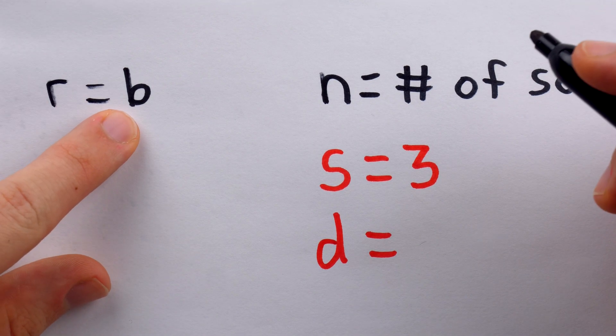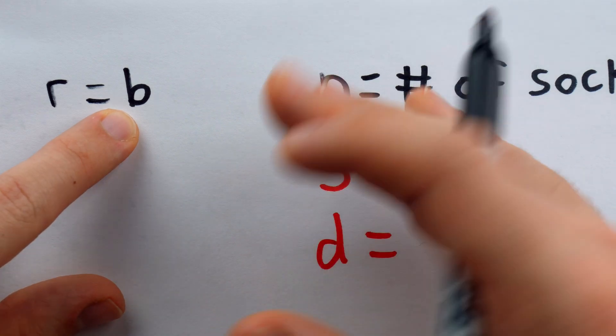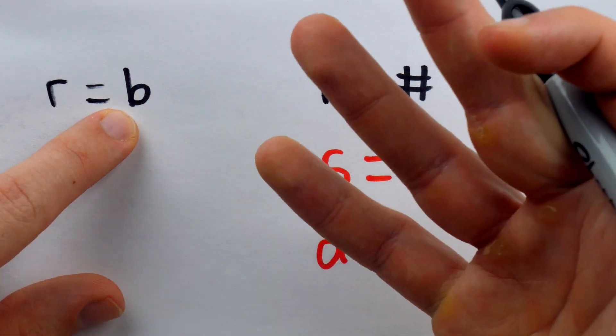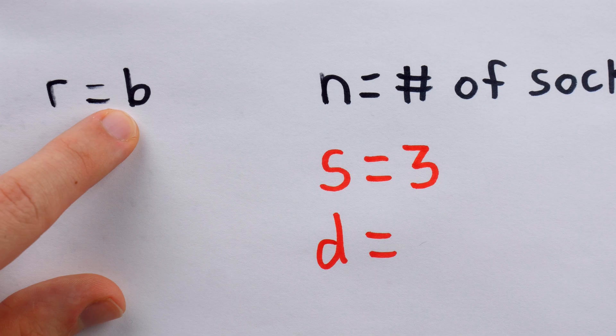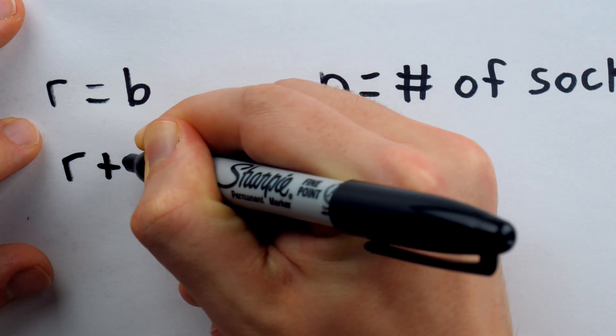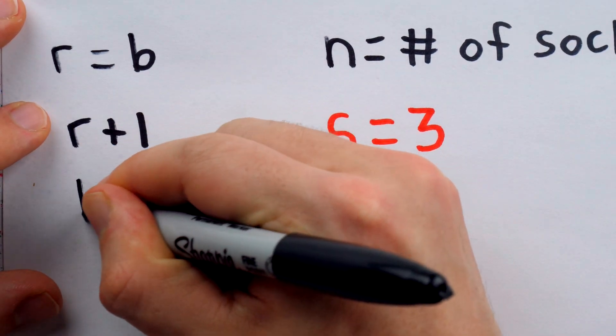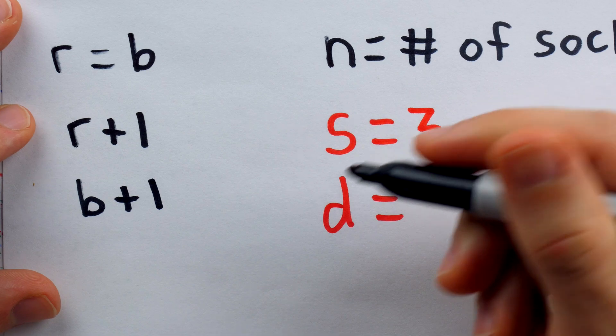Of course, the same thing is true of B. It's possible that we could take B socks from the drawer and just have all of the B blue socks, and thus still not have a mixed pair. Necessarily, then, we must take one more than R socks to guarantee that we have a mixed pair, or one more than B socks to guarantee that we have a mixed pair.